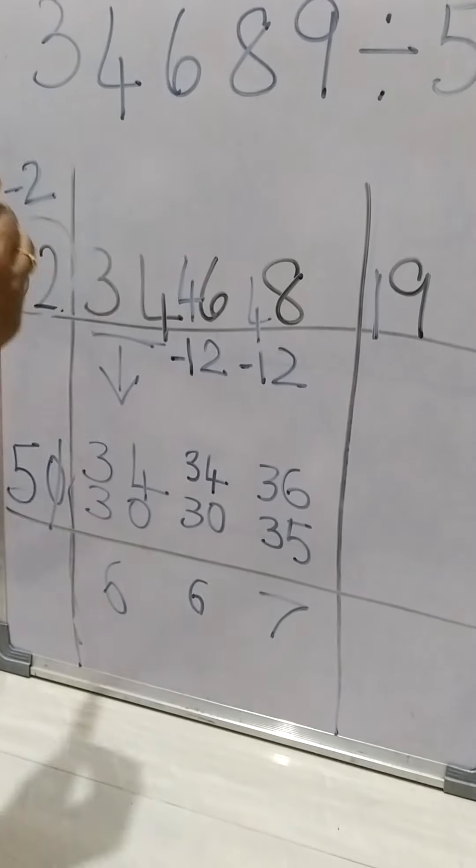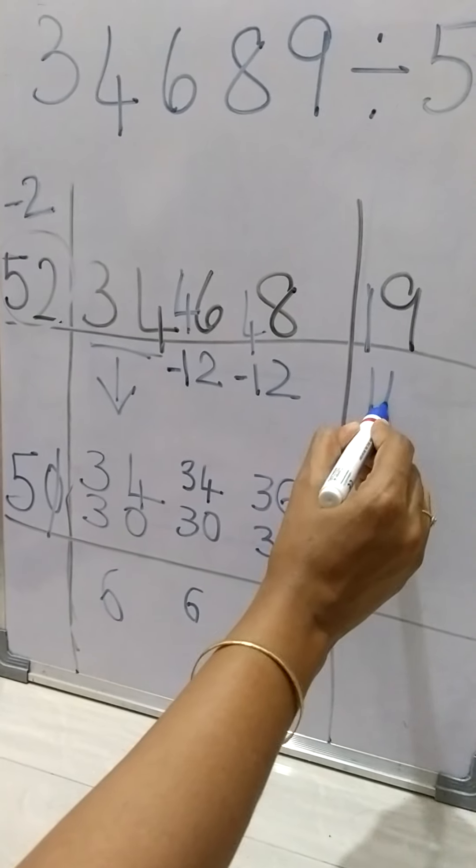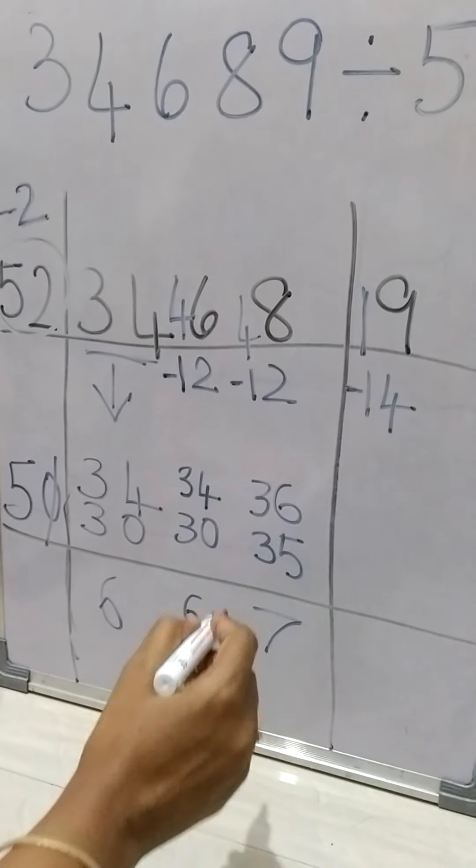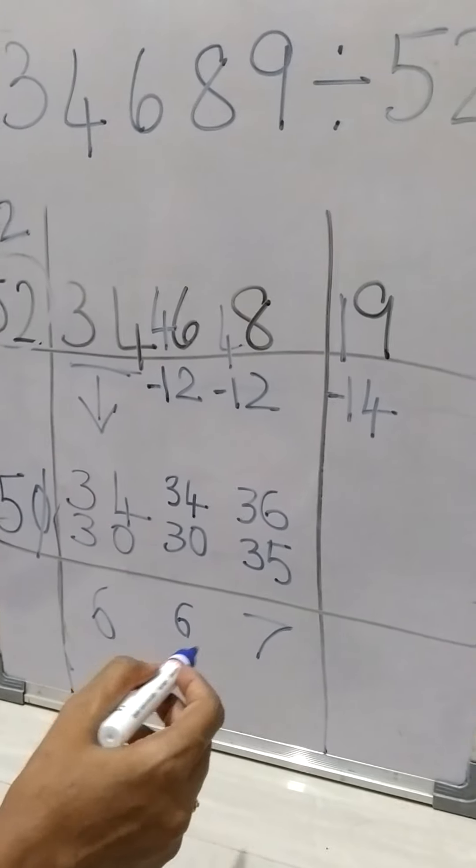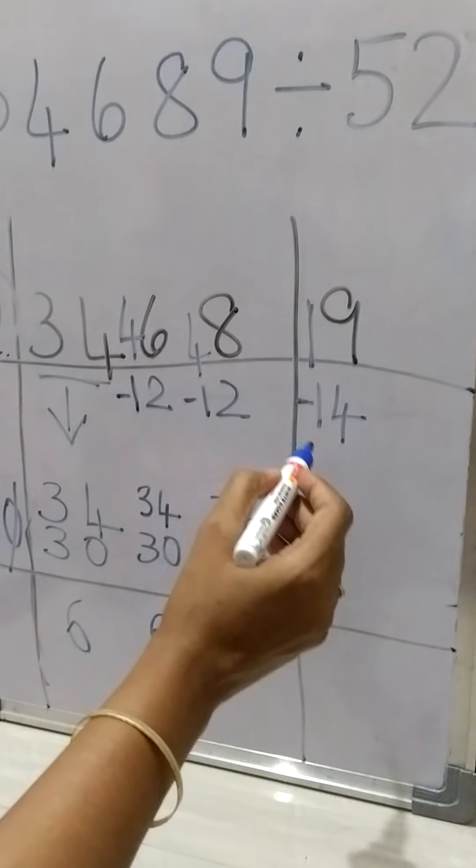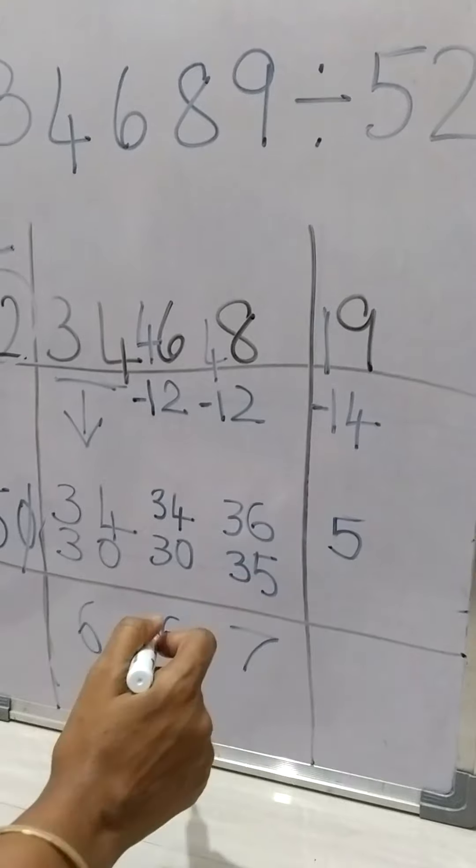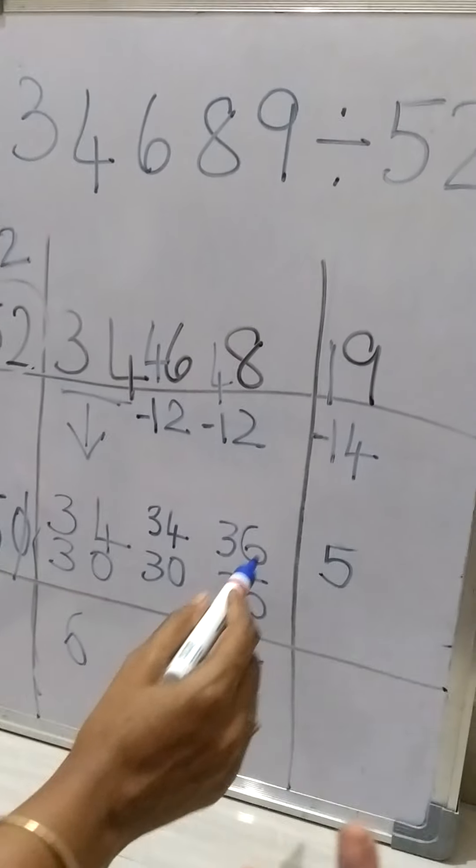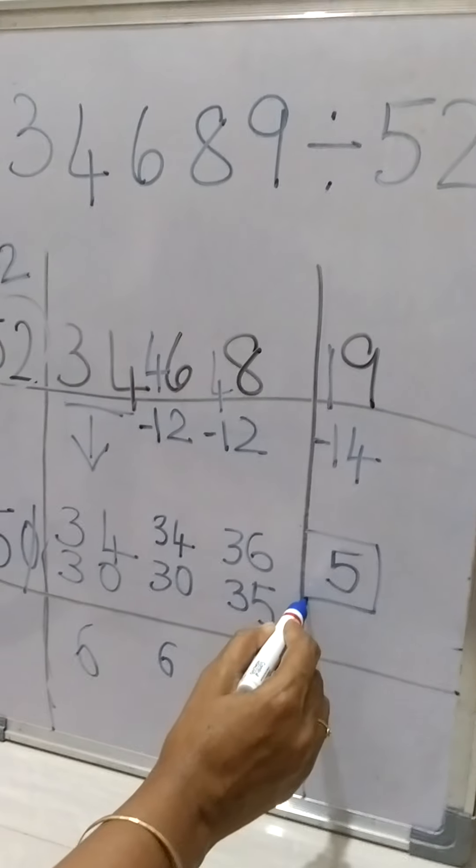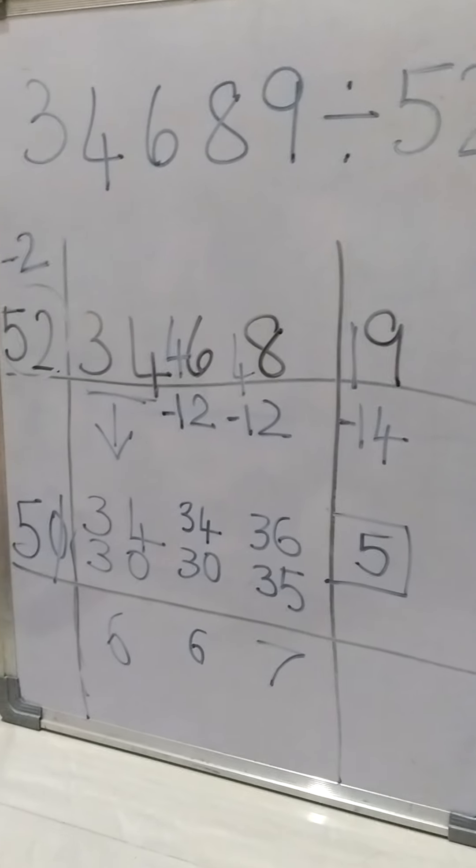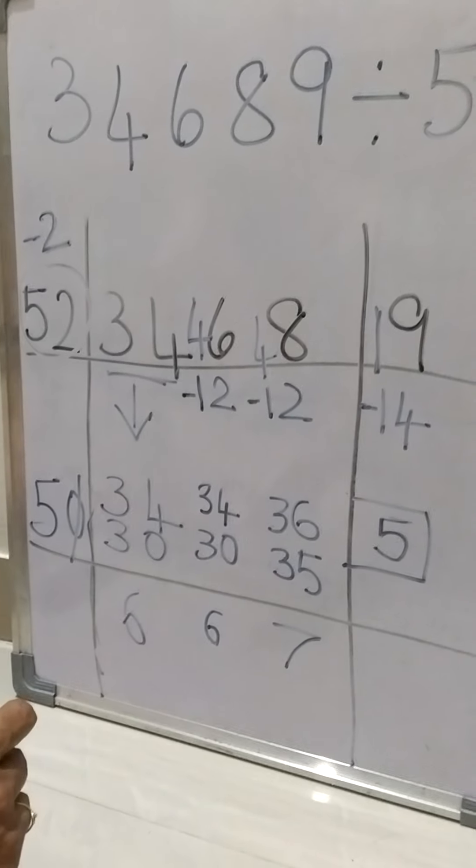And then 7 times 2 is 14. If we subtract it, our answer will be 5. So now this is our final remainder, but if you want to go further in decimals, then you need to keep a decimal point and you need to do the same step.